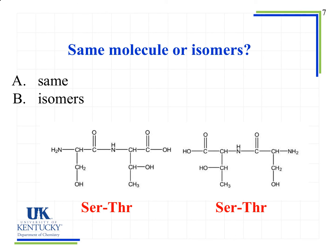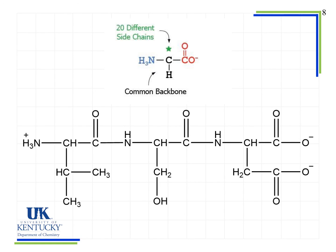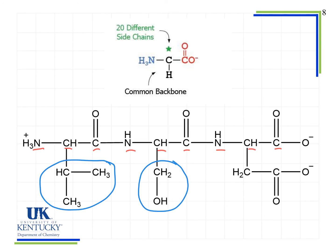Here's a tripeptide, and we see the same backbone pattern: NCC, NCC, NCC. Although there are three amino acids together, that pattern of the backbone doesn't change — what changes are the side groups. We have three side chains, so there are three amino acids. We have our N-terminus, our C-terminus, and that same backbone pattern. The new bonds that formed are between the carbonyl carbon and the nitrogen — one new bond there, and another new bond there.